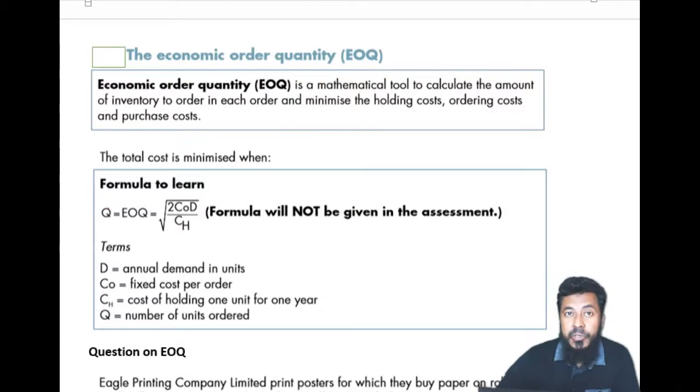Economic Order Quantity, EOQ, is a mathematical formula which helps you to minimize the ordering cost and holding cost of your inventory. And it is represented by a formula. So let's look for the formula.